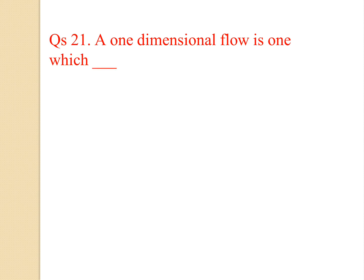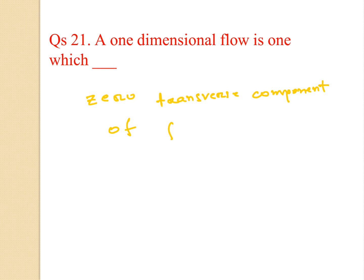One-dimensional flow is one which has zero transverse component of flow — it has no velocity component in the transverse direction.